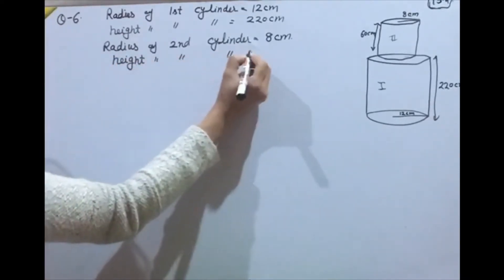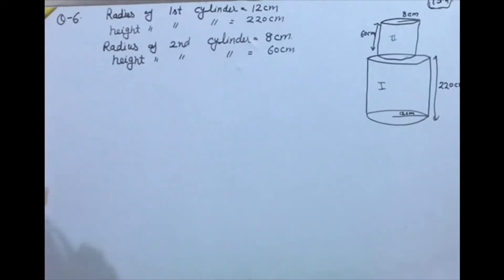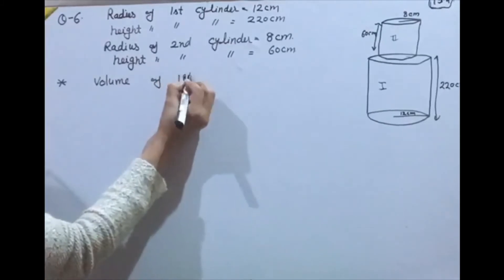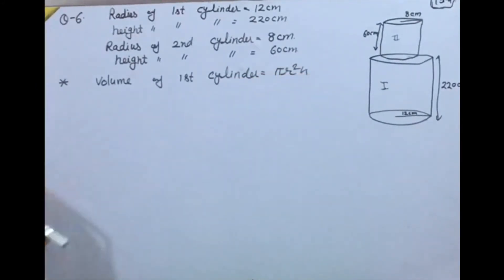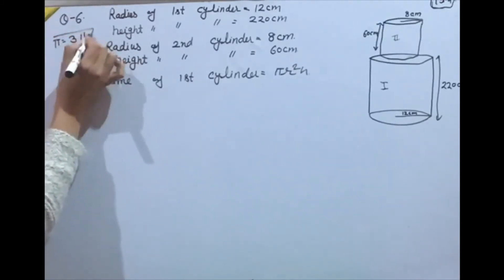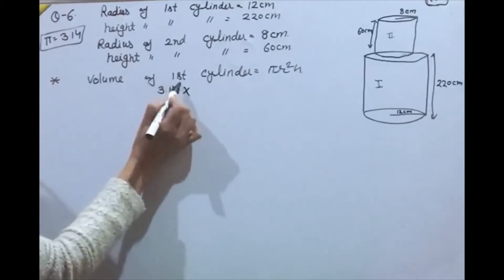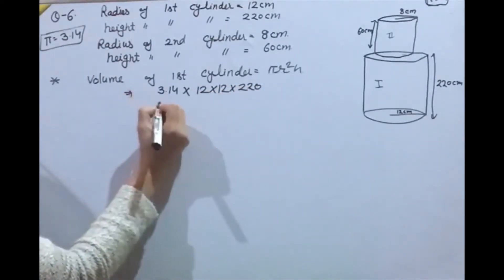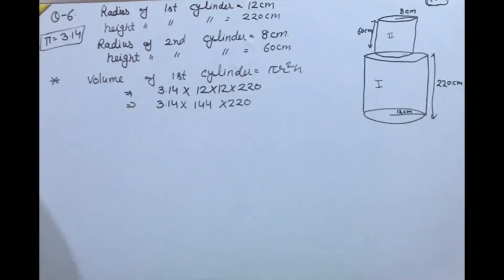Height of second cylinder = 60 cm. Now we find the volume of each cylinder. Volume of first cylinder = π r² h. Using π = 3.14, r = 12 cm: 3.14 × 12 × 12 × 220 = 3.14 × 144 × 220.